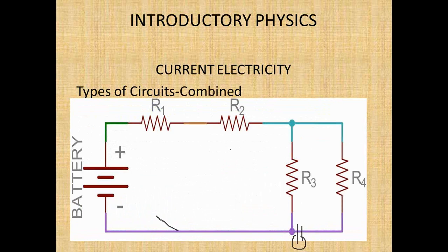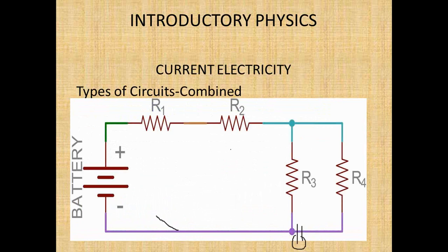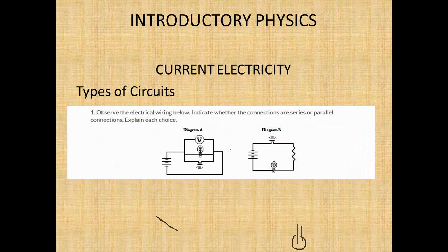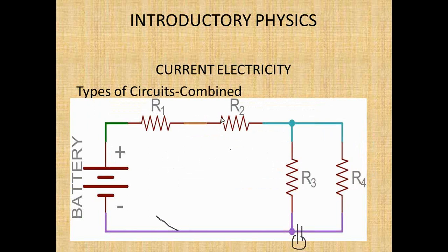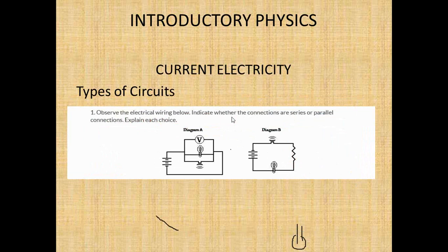Those are the two most important points about parallel circuits. You can also have circuits in combinations — a combined circuit with two resistors in series and two in parallel. So you can have a pure series circuit, a pure parallel circuit, or a combined series-parallel circuit.